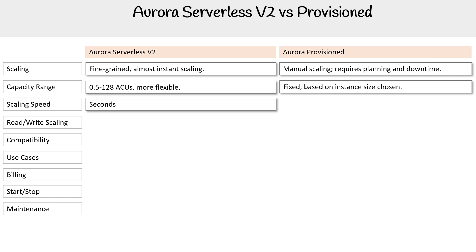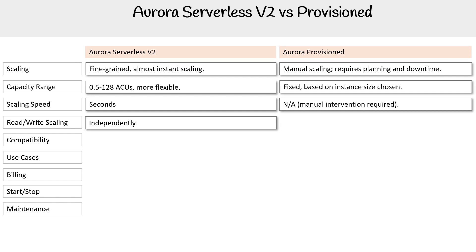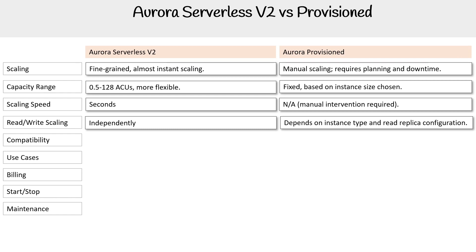For Aurora Serverless v2, it scales in seconds. For provisioned, it requires manual intervention, so it's only as fast as you act on it. For Aurora Serverless v2, reads and writes scale independently. For provisioned, it depends on the instance type and read replica configuration.